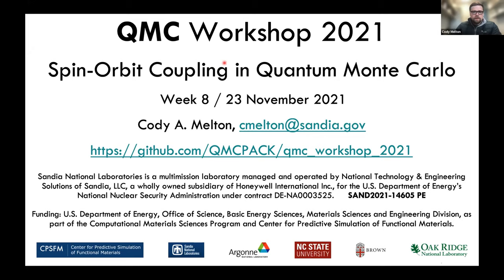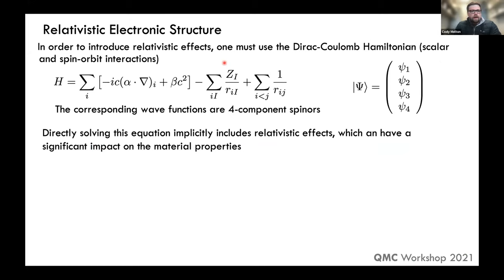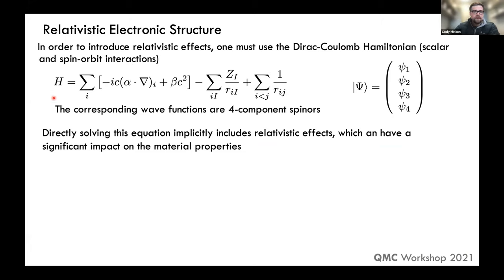The title of the talk is spin-orbit coupling in quantum Monte Carlo. For those who know, spin-orbit is ultimately a relativistic effect. If we're interested in studying materials to high accuracy, one would think you need to use the full Dirac equation to incorporate all relativistic effects, especially for heavy element materials where relativity becomes important.